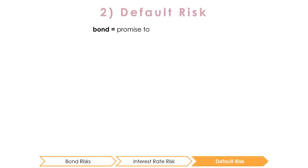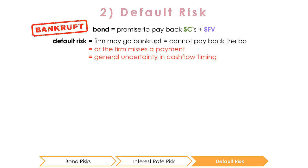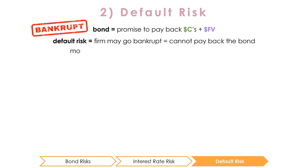When a company issues a bond, it makes a promise to pay the periodic coupon payments as well as the principal payment on the maturity date. However, this doesn't mean investors are guaranteed to receive these payments. The company may go bankrupt or get behind on their coupon payments — that is, there is a risk that the company will default on the bond. This level of risk is different for each bond; the degree of default risk varies across companies and even across industries, with some being more stable and therefore having a lower risk of defaulting.